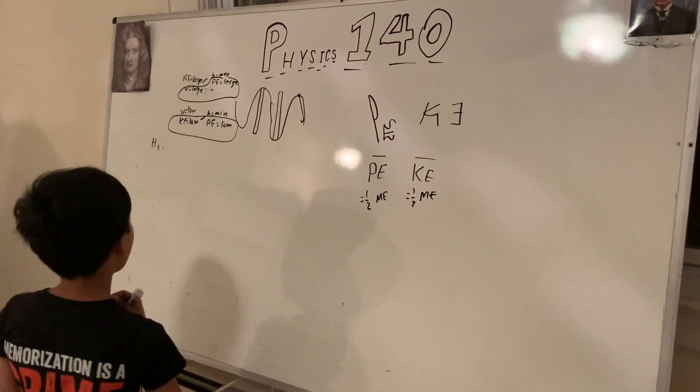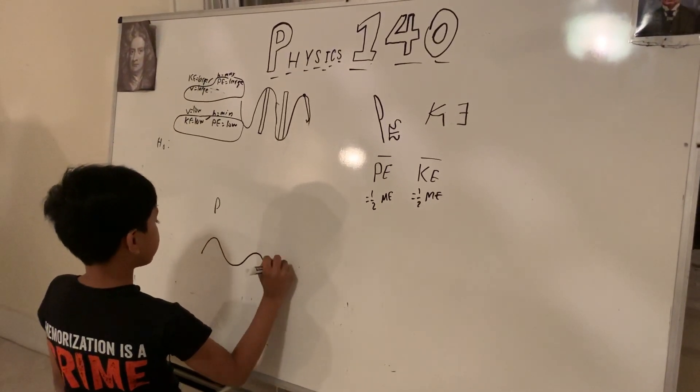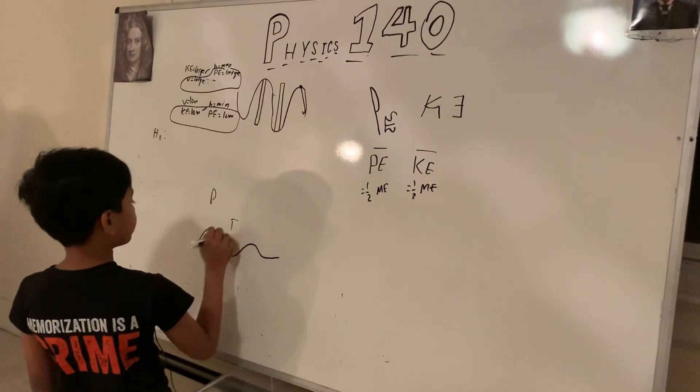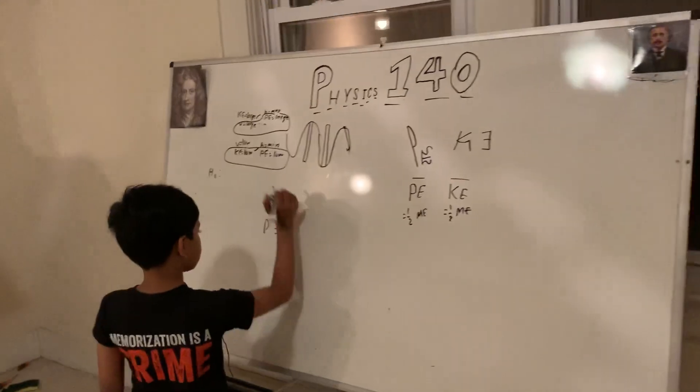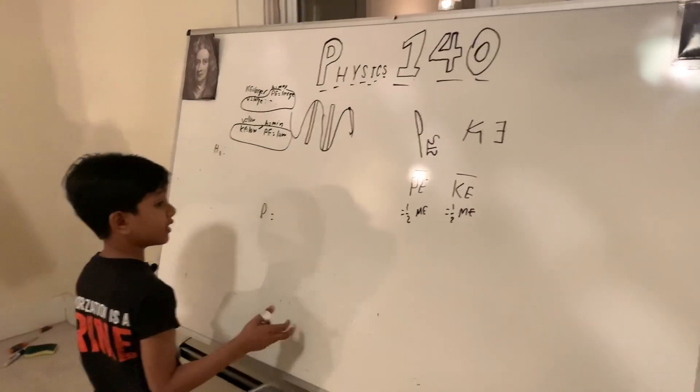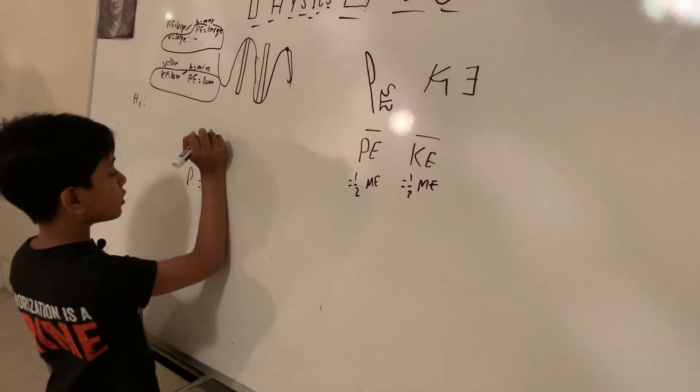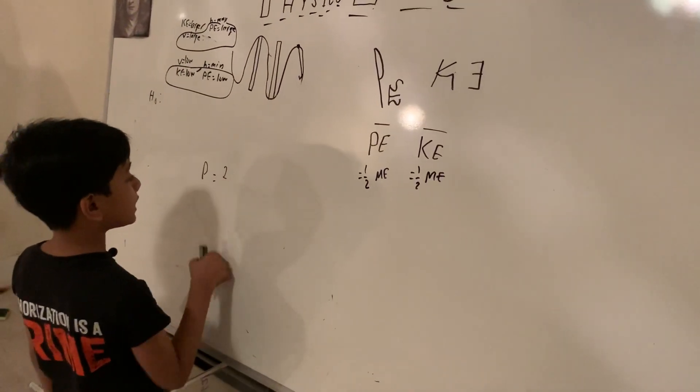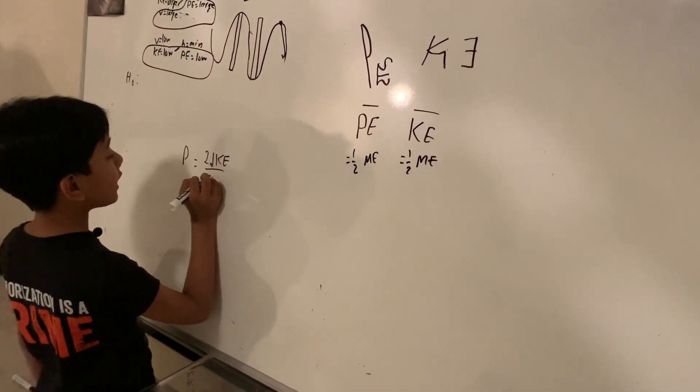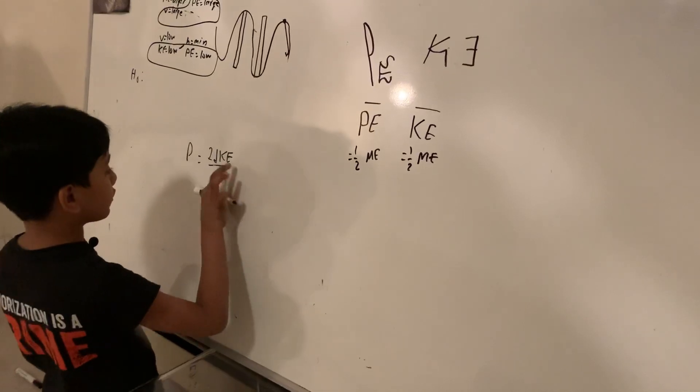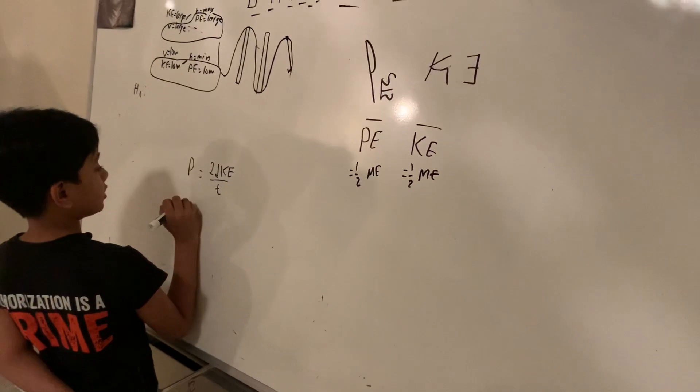So power is really how much energy is being transmitted over a period of time. So average KE is going to be equal to that. If average KE is going to be half, then two average KE would be the full energy being transmitted over T for time, of course. Now let's see if this works out.